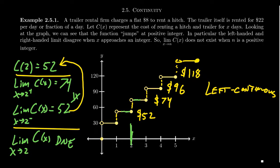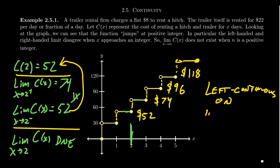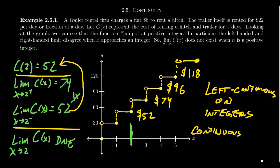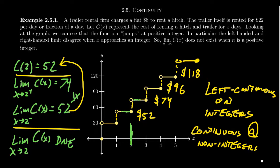Going back to the trailer rental example, this is a left continuous function. At any integer value, the function is defined and the left-hand limit agrees with the function — that's why it's left continuous. If you pick any non-integer in the domain, the function is fully continuous at that point, since the approach from both left and right agrees with the function. So this step function is left continuous on integers and continuous on non-integers in its domain. At a step, you definitely won't be fully continuous since discontinuities appear at those steps.